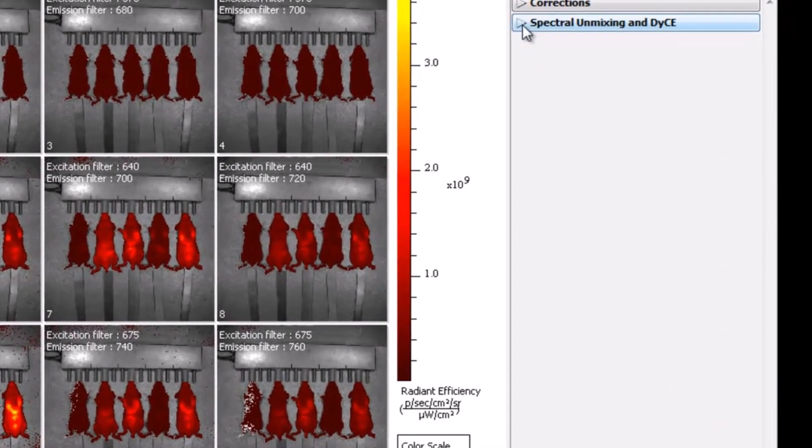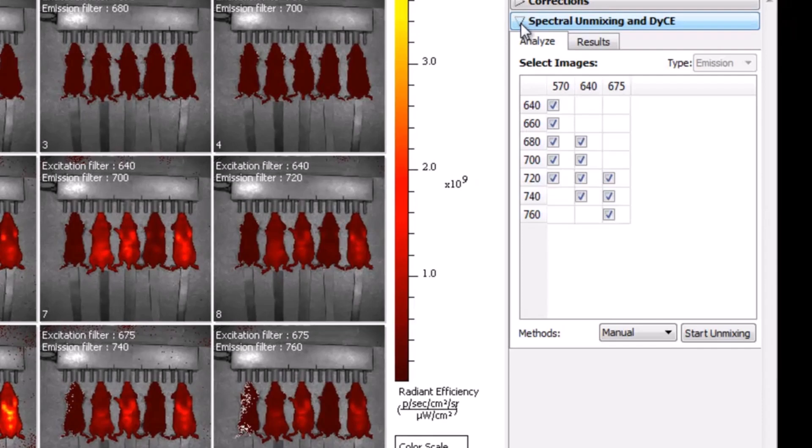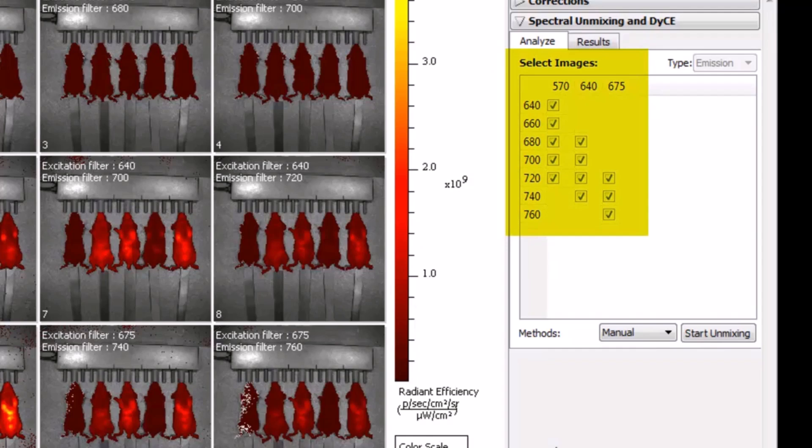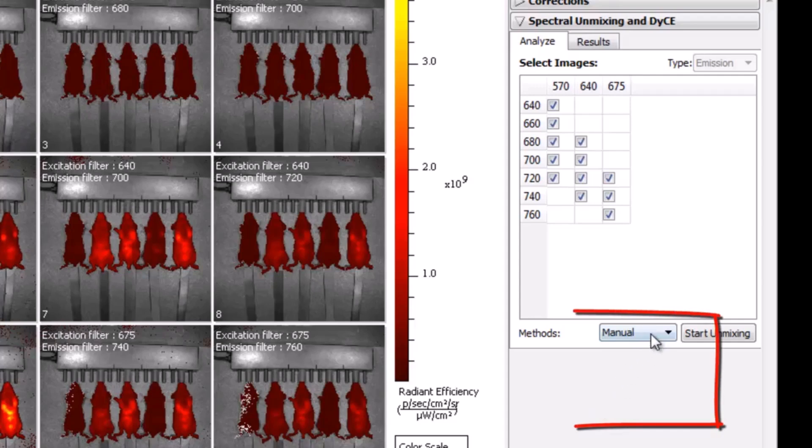Apply the adaptive fluorescence background subtraction correction from the corrections tab in the tool palette. The calibrated unit we use for analysis is called radiant efficiency. Select the unit from the upper left hand corner of the image window. We are now ready to create the spectral library. Open the spectral unmixing tab in the tool palette. You will see all combinations of excitation and emission filters that were used to take the images in the sequence. If any saturated images exist they will be deselected automatically. In this video we will use the manual method to create and save our library.